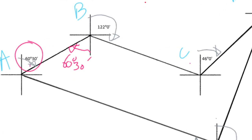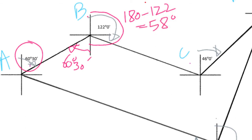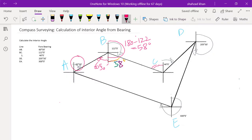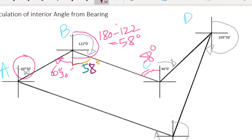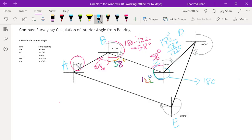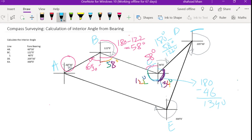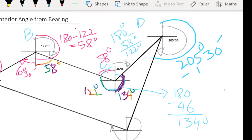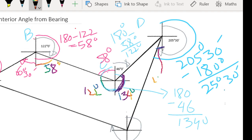The angle 60 degrees 30 minutes subtended with north at point A will also appear at point B. Since 122 degrees 0 minutes is the bearing of BC, subtract 122 degrees from 180 degrees to get 58 degrees. Coming to point C, this 58-degree angle will be equal to the corresponding angle there. Subtract 58 degrees from 180 degrees to get the interior angle at C, which is 122 degrees. Then subtract 46 degrees from 180 degrees to get 134 degrees for the next step. At point D we have a fore bearing of 205 degrees 30 minutes; subtract 180 degrees from 205 degrees 30 minutes to find the remaining angle, which is 25 degrees 30 minutes.